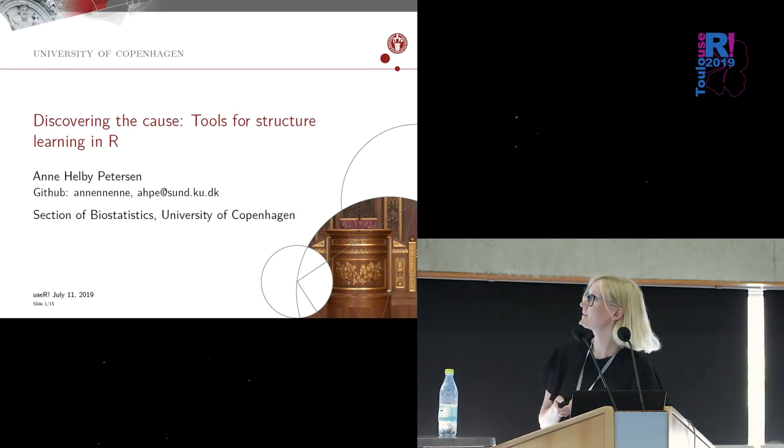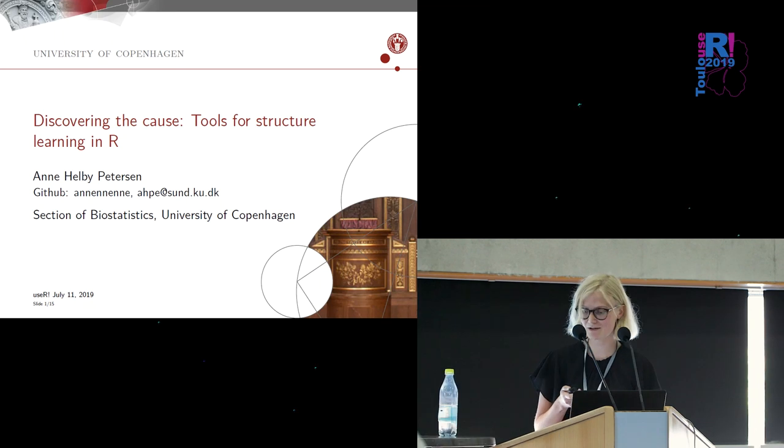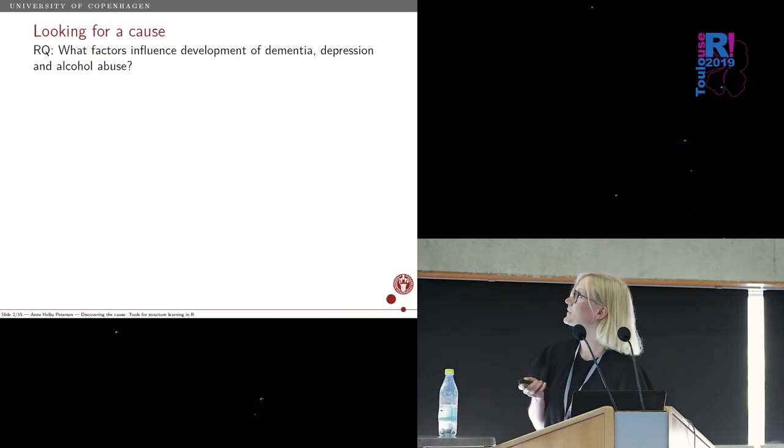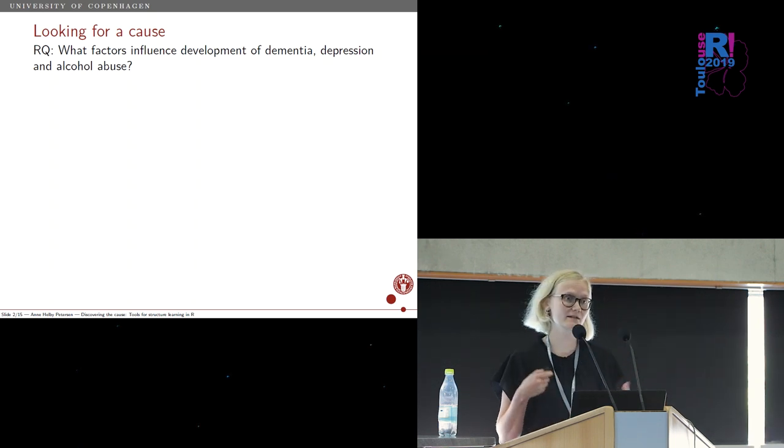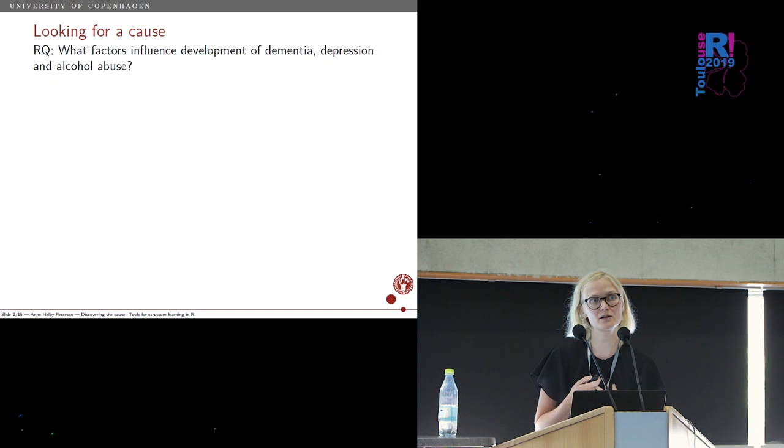Okay, so I'm going to talk a little bit about causal discovery and some tools for doing that in R. Just to start off, I've brought a motivational example, a research question I've been working on myself to show you why causal discovery might be interesting. The question is, what factors influence the development of dementia, depression, and alcohol abuse? This is a classical research question in epidemiology because it's something that we cannot really answer with experiments, so we need to rely on observational data.